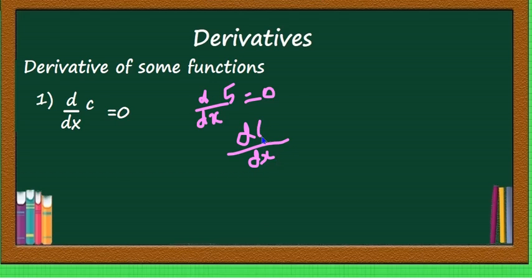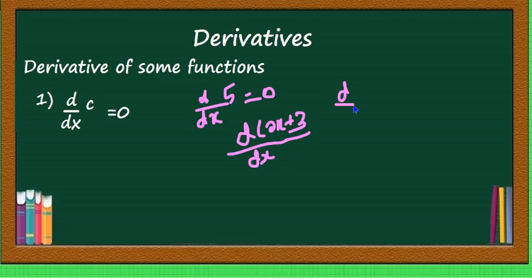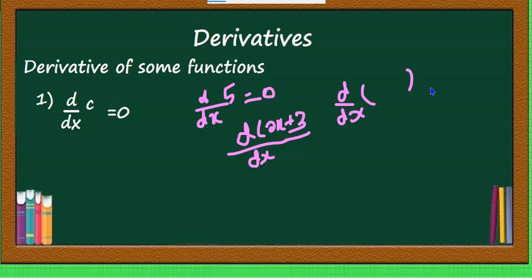Remember, while writing d by dx, don't write it like a division — for example, 2x plus 3 in the denominator. It is an operator, and that is why while writing the derivative you have to write d by dx of something, any function. It is not division.